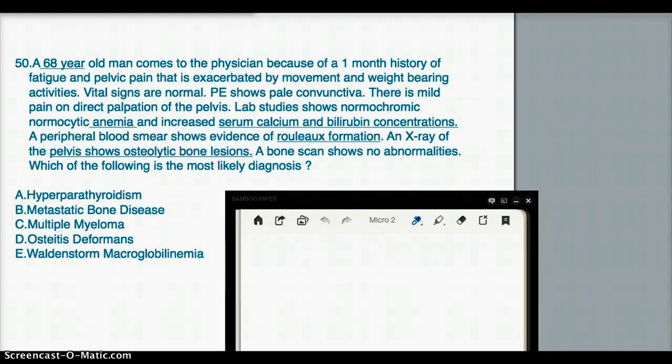Physical exam shows pale conjunctiva. There is mild pain on direct palpation of the pelvis. Lab studies show normochromic normocytic anemia and increased serum calcium and bilirubin concentrations.